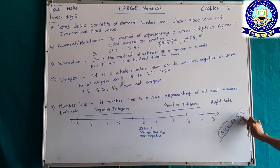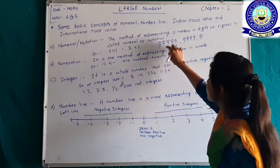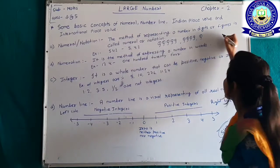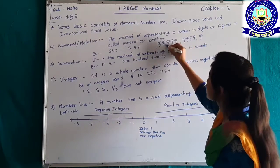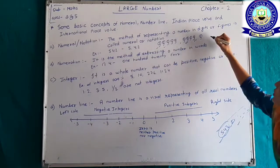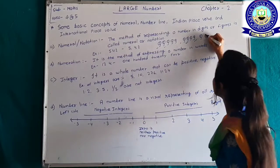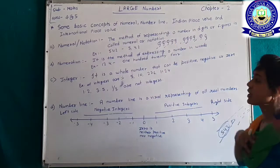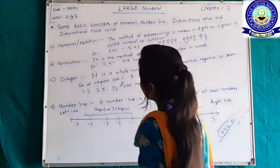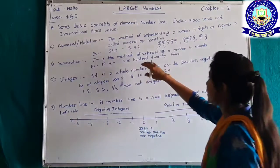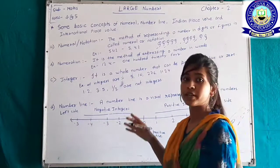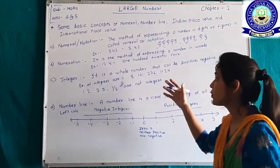We can also show it with the help of a diagram: 5 means 5 cubes, 4 means 4 cubes, and 2 means 2 cubes — that is our numeral. And next, what is numeration? It is a method of expressing a number in words. When we write a digit or number in words, it is called numeration.